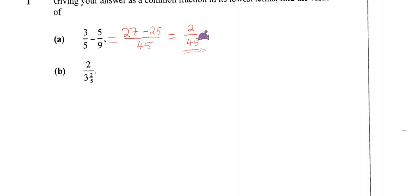The next question says 2 divided by 3 and 2/5. The first step here, I think we would have to change the denominator first to an improper fraction. So that becomes 2 divided by, to change 3 and 2/5 to an improper fraction we say 3 multiplied by 5, that is 15, and 15 plus 2, that is 17. So we will have 17 over 5. That is the improper fraction.